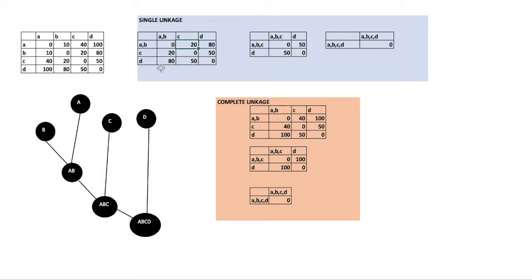The next step is to find the nearest closest pair of points again. From here we can see A-B to C is 20, so we merge A-B and C. Then from A-B to D the distance is 80 and C to D is 50, so the minimum distance is from C to D, which is 50. We write 50 here.